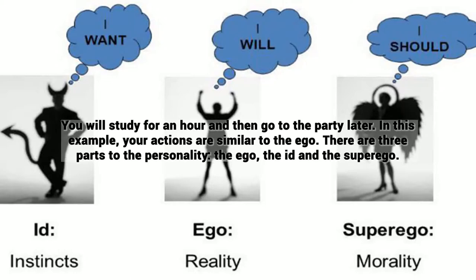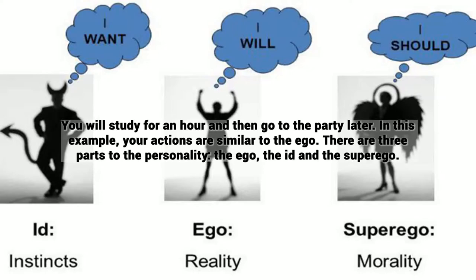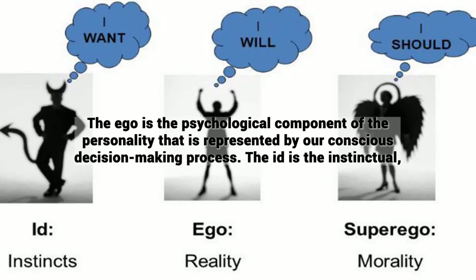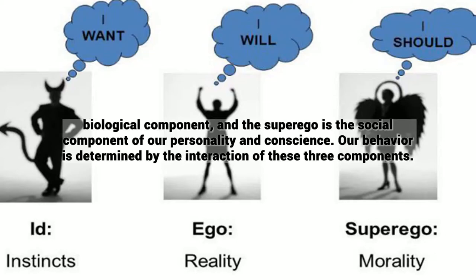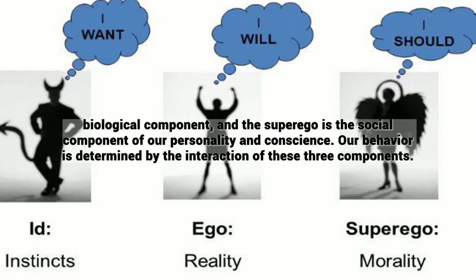There are three parts to the personality: the ego, the id, and the superego. The ego is the psychological component of the personality that is represented by our conscious decision-making process. The id is the instinctual, biological component, and the superego is the social component of our personality and conscience. Our behavior is determined by the interaction of these three components.